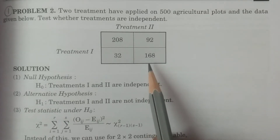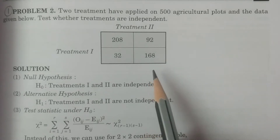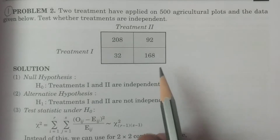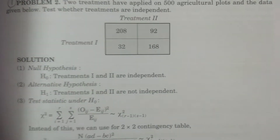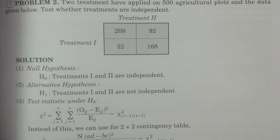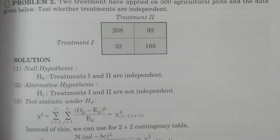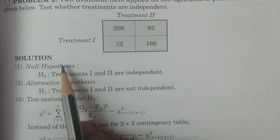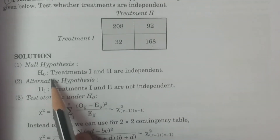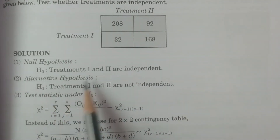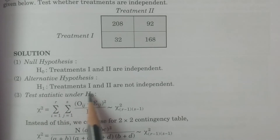We have to test whether the treatments are independent or not, for which we can apply the chi-square test for independence of attributes. The null hypothesis H₀ is that treatments one and two are independent, and the alternative hypothesis H₁ is that treatments one and two are not independent.